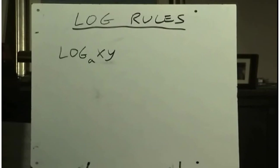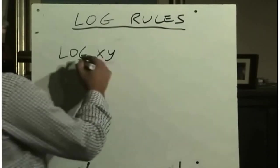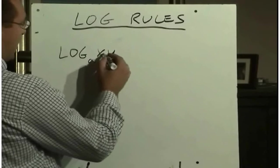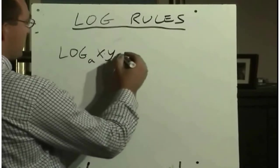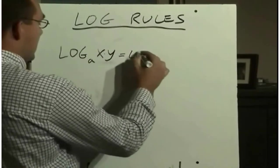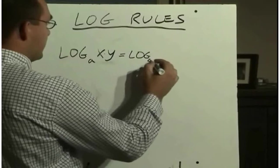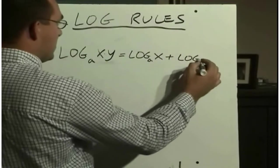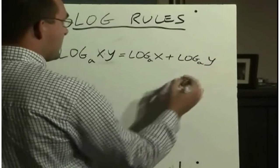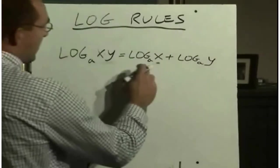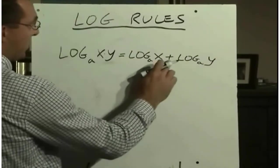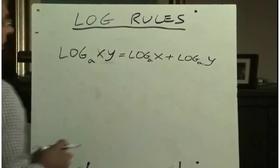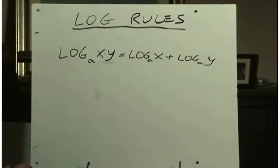This next rule is the rule for multiplication. And it says this. If we have log base A of x times y, so the logarithm of two things multiplied together, then this can be equal to log base A of x plus log base A of y. Or you can read it the other way too. If I have log base A of x plus log base A of y, then that's the same thing as log base A of x times y.